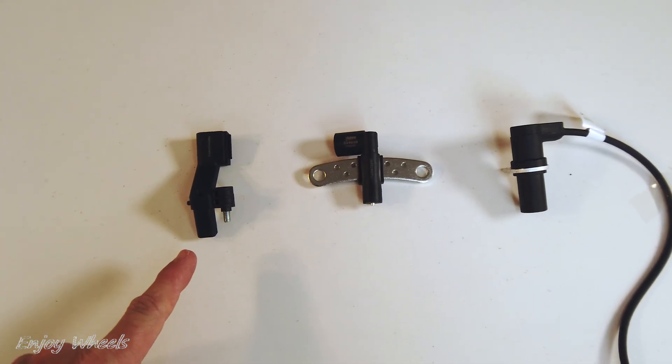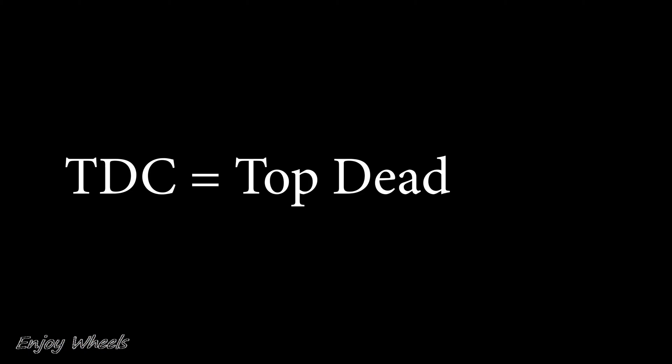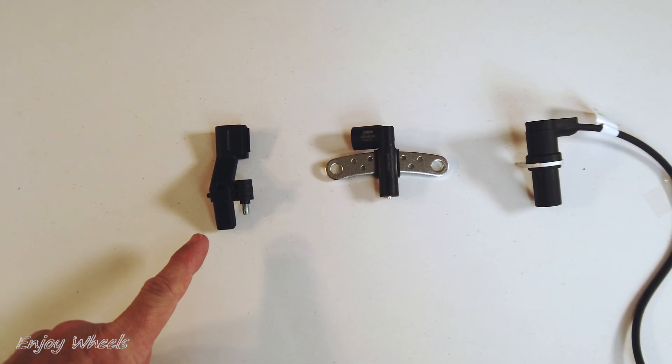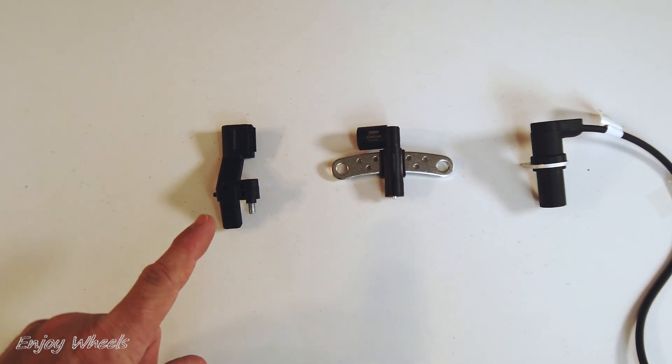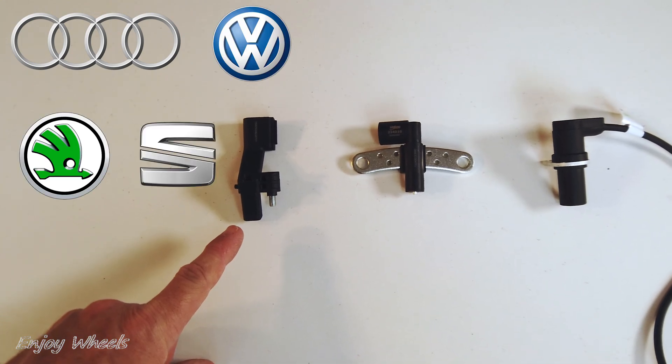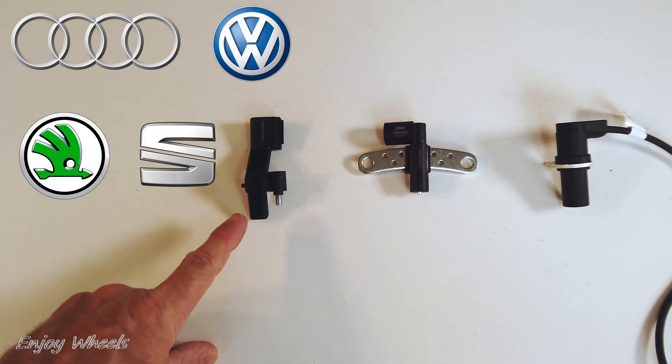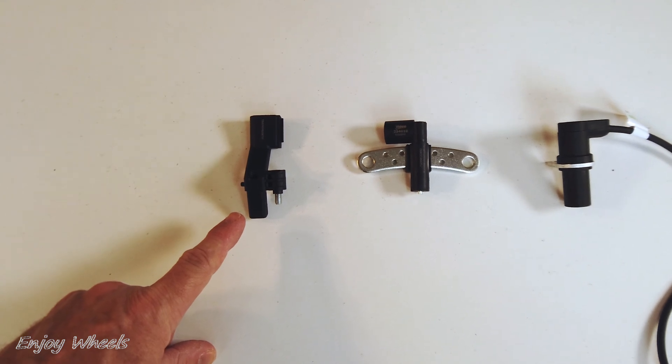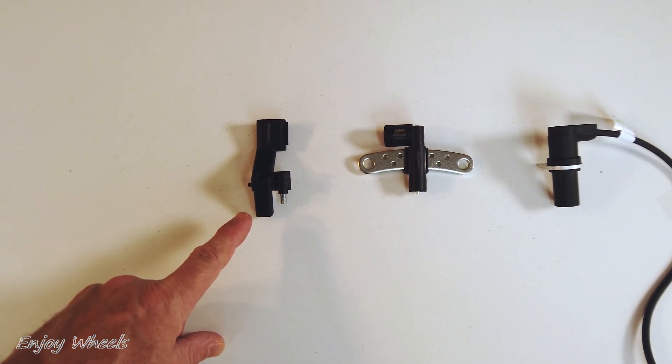The first here is a TDC sensor. TDC stands for top dead center, but we can also say crankshaft position sensor. This sensor is found on Audi group vehicles - Audi, Volkswagen, Skoda, Seat mainly. We will find it on almost all the models of the group, whether petrol or diesel. And to work, this sensor uses the Hall effect.